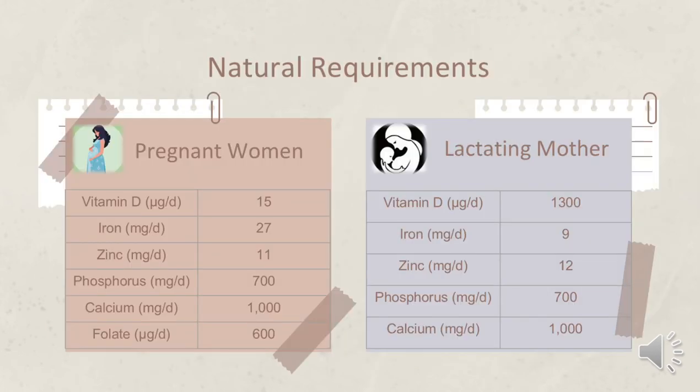Next is pregnant women. Their nutrient requirements include: vitamin D 15 micrograms per day, iron 27 milligrams per day, zinc 11 milligrams per day, phosphorus 700 milligrams per day, calcium 1,000 milligrams per day, and folate 600 micrograms per day.